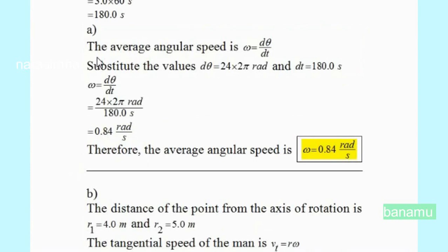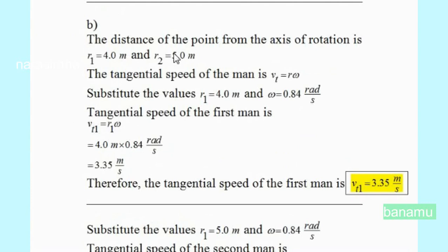The average angular speed is omega equals D-theta divided by Dt. Substituting the values: D-theta is equal to 24 times 2 pi radians, R1 is equal to 4 meters.